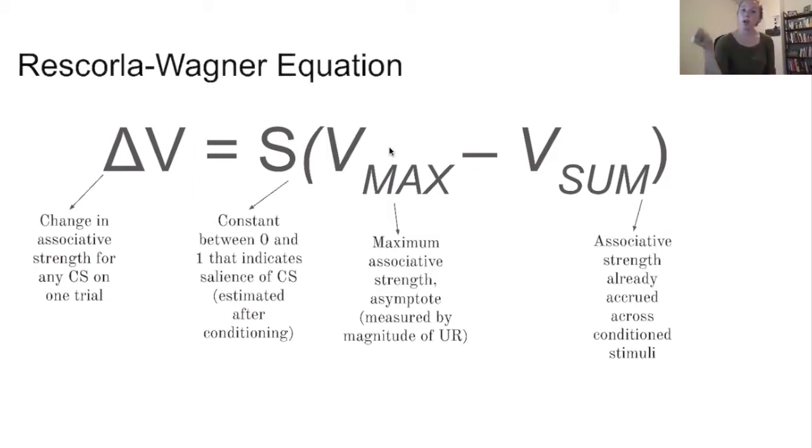The way that you calculate that is by taking the S, which is salience, and it is a constant between zero and one and indicates the salience of the conditioned stimulus. This is actually estimated after conditioning, which is a little strange, but it's based on that first, after the conditioning occurs, you can look at strength across trials.